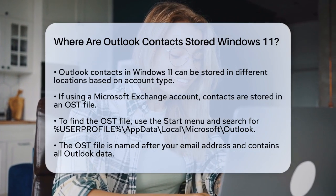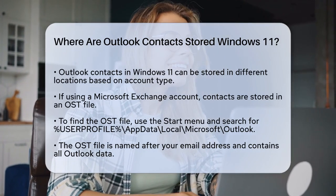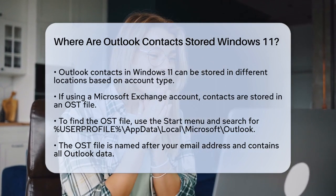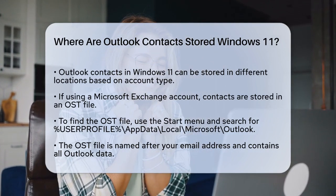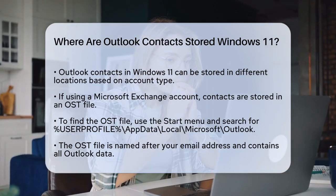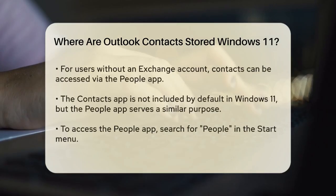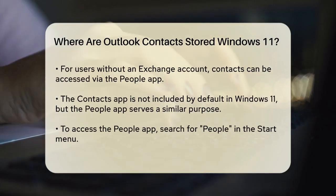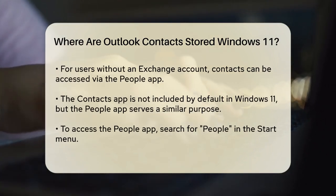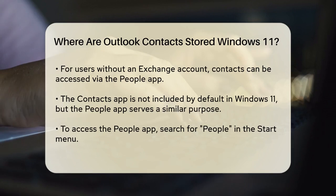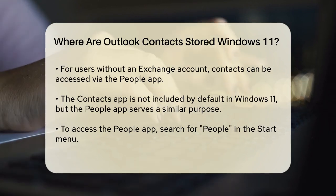If you're using Outlook with a Microsoft Exchange account, your contacts are likely stored in an OST file. To find this file, you can use the Start menu. Click the Start button and type %UserProfile%\AppData\Local\Microsoft\Outlook in the search box. Press Enter, and this will open a folder window where you'll find the OST file named after your email address. This file contains all your Outlook data, including contacts, emails, and other information.